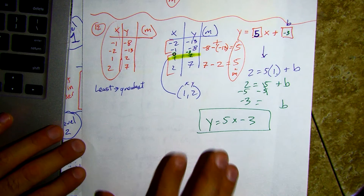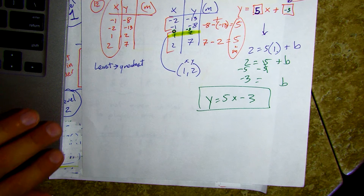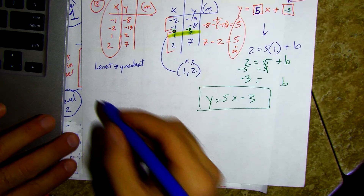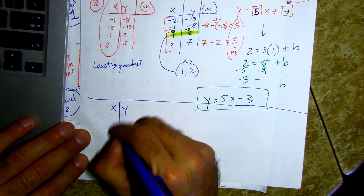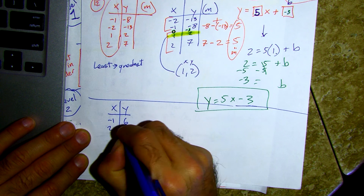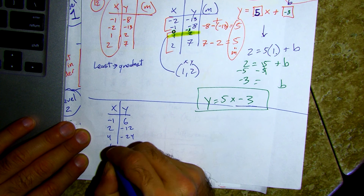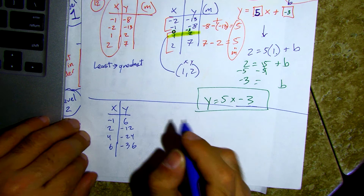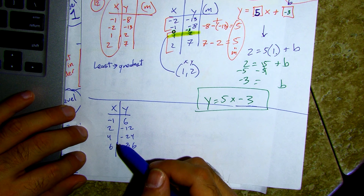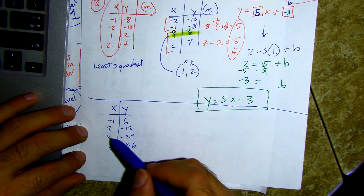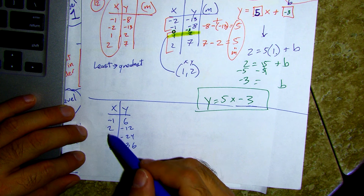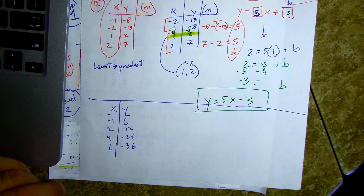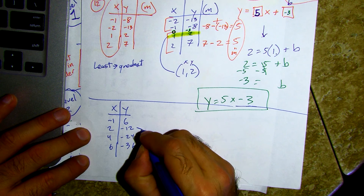All right, fourteen: x, y — negative one, six; two, negative twelve; four, negative twenty-four; six, negative thirty-six. Okay, we don't have any sequential numbers here. Negative one, two, four, six — we don't have zero or one through six, so we're going to be a little tricky here.